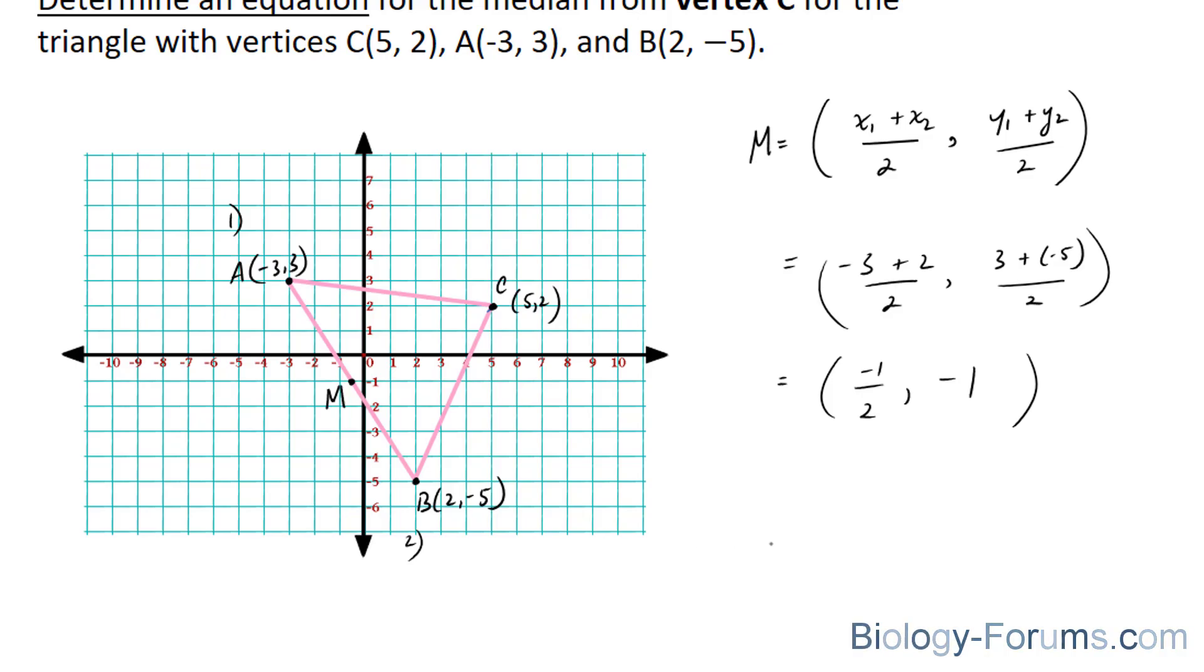Now the question is asking, determine an equation from the median, which is this midpoint, to the vertex C. Now keep in mind that by cutting this line segment in half, you have two equal portions.